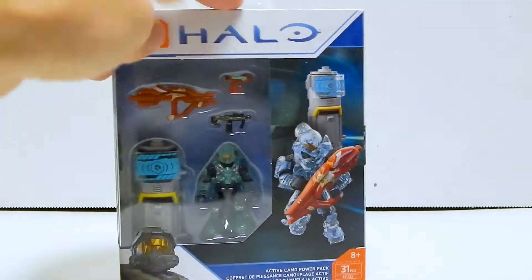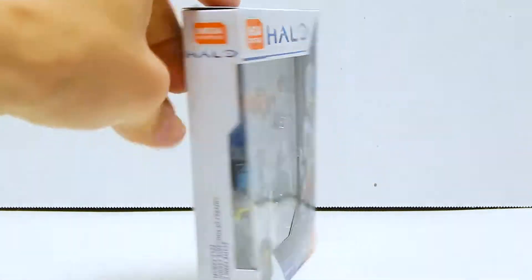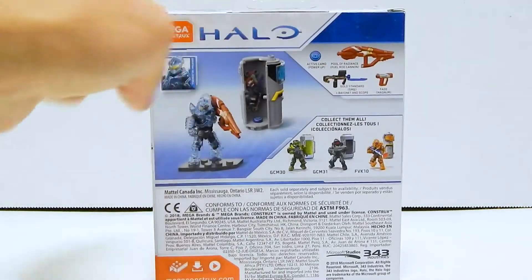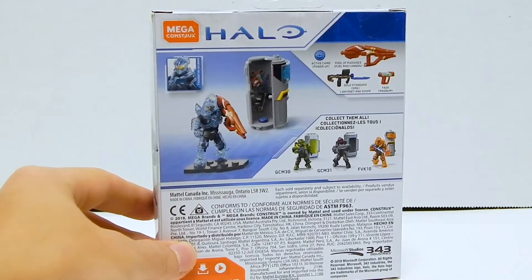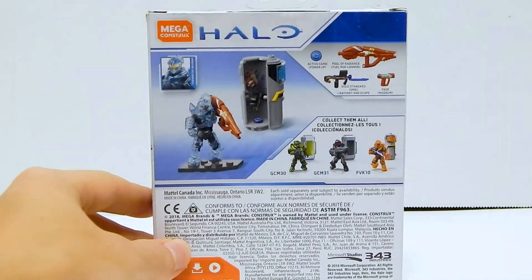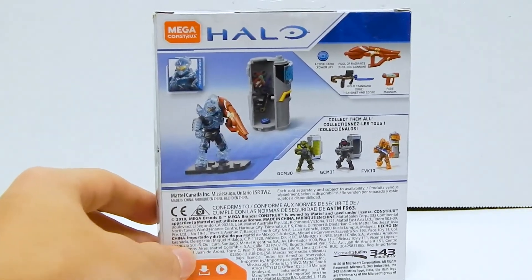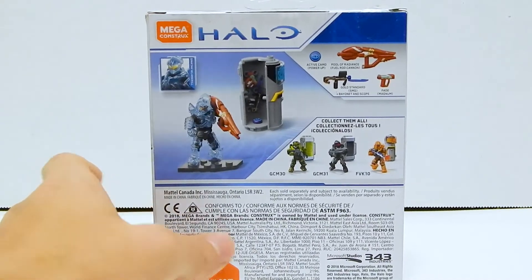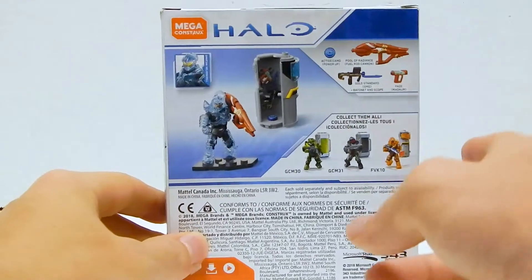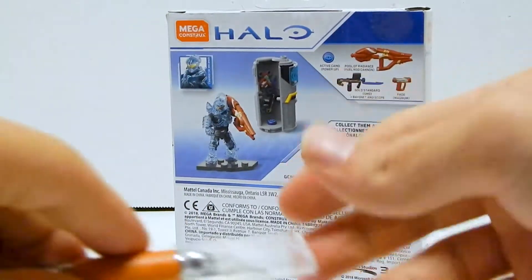What's interesting is this is supposed to be Active Camo, but the figure is not entirely clear. That's kind of interesting and diverges from Mega's normal Active Camo style. There's the back. You can see the weapons that are included and some of the other power and armor packs. So let's go ahead and open this up.